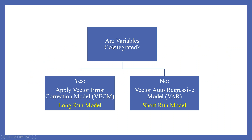The question is: are variables co-integrated? If yes, apply the vector error correction model — that is a long-run model. If they are not co-integrated, apply the vector auto-regressive model — that is a short-run model. I have already uploaded a video on the vector auto-regressive model; kindly refer to that video in my playlist.